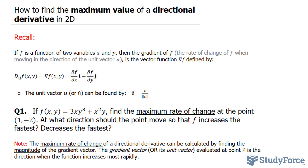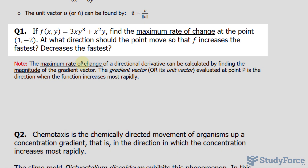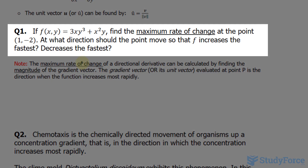In this lesson, I'll show you how to find the maximum value of a directional derivative in 2D. The first question reads: if the function f(x,y) is equal to 3xy³ + x²y, find the maximum rate of change at the point (1, -2).